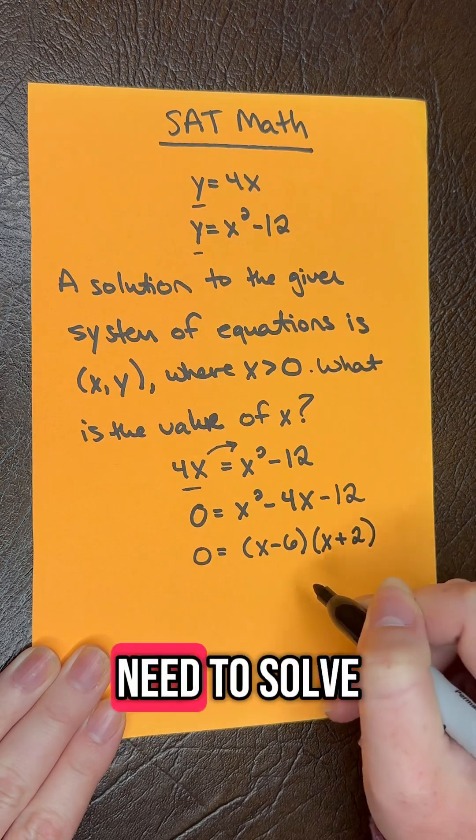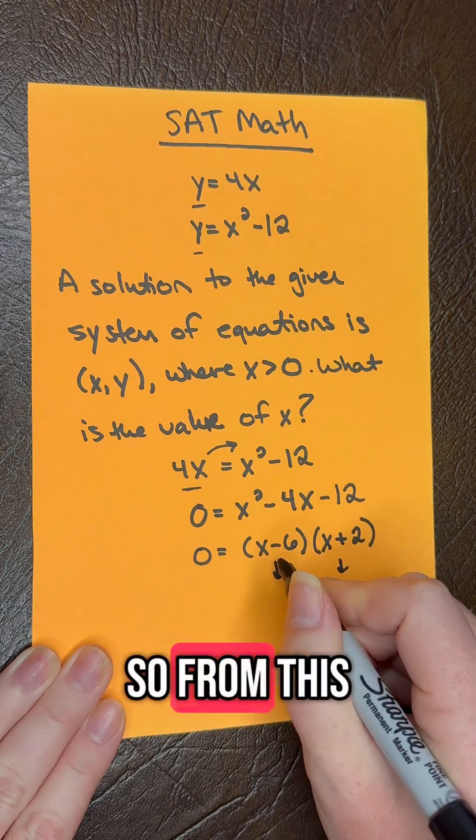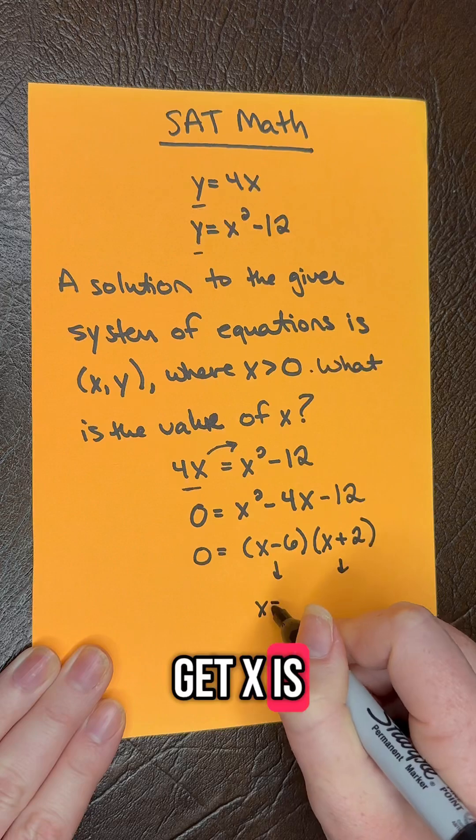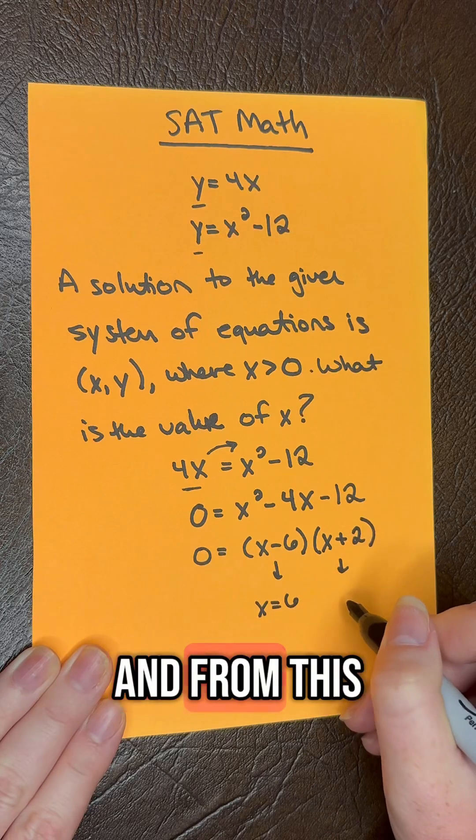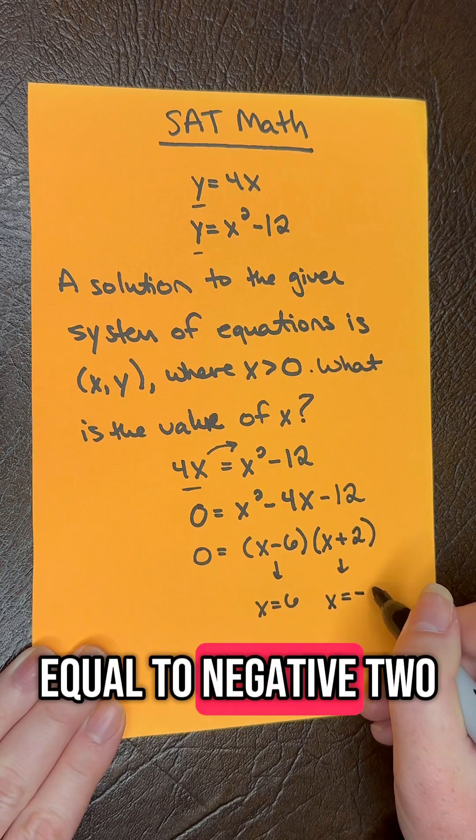And then we need to solve for our two x values. So from this, we're going to get x is equal to 6. And from this, we're going to get x is equal to negative 2.